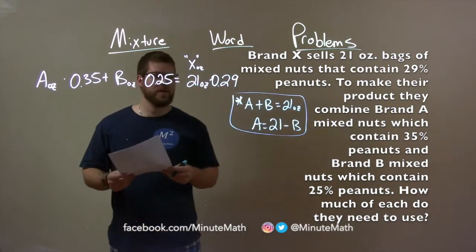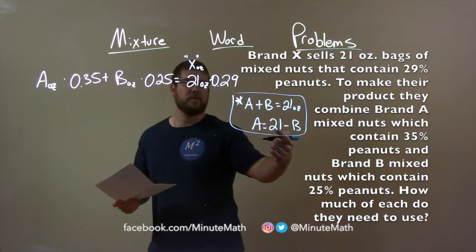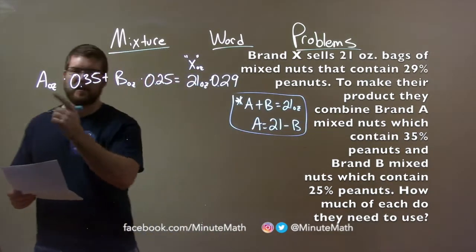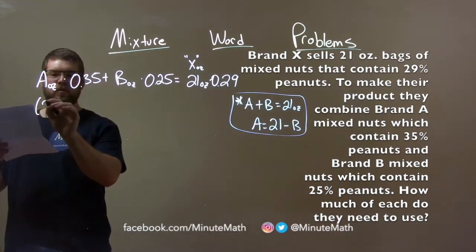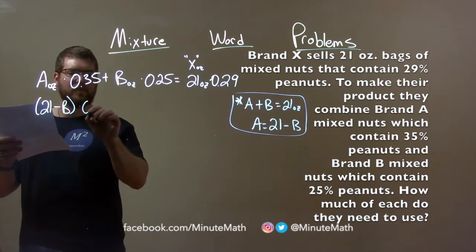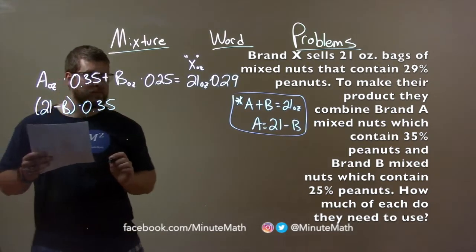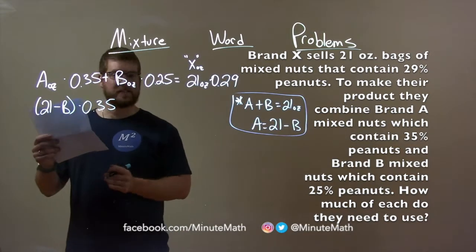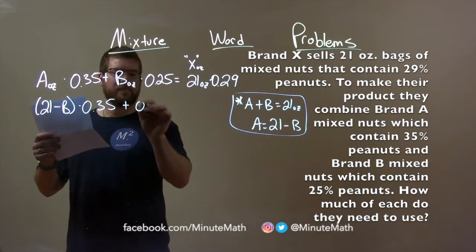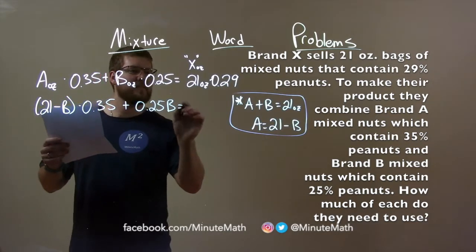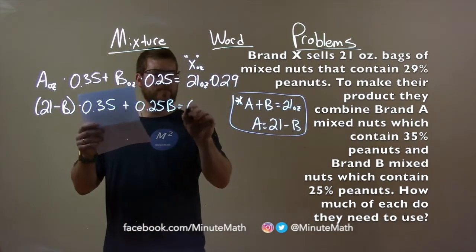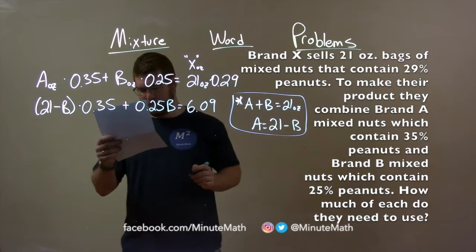And so, on our next step here, we're going to take that fact and substitute A in here. 21 minus B in for this A. All right? So, let's do a line 5. 21 minus B times 0.35. Now, this is the substitution method, right? For solving a system of equations, fun fact, plus 0.25 B, rearranging that. And that's equal to, what's 21 ounces times 0.29? And that's 6.09.